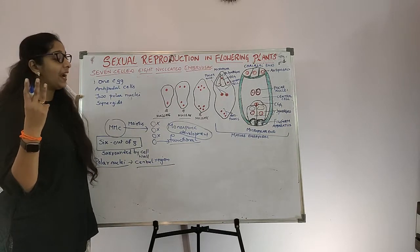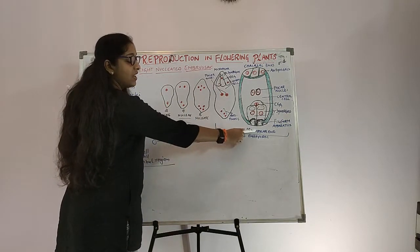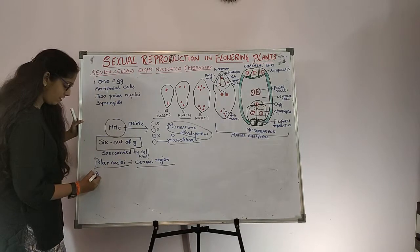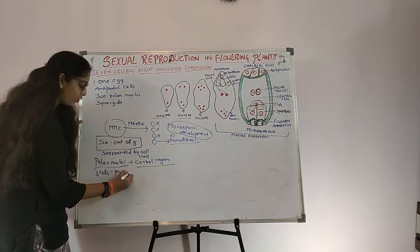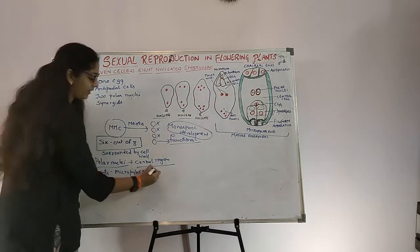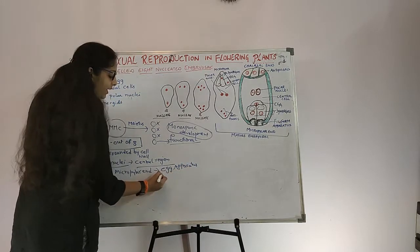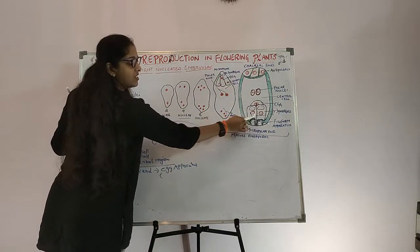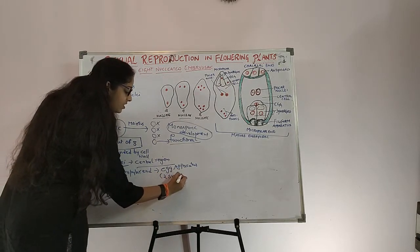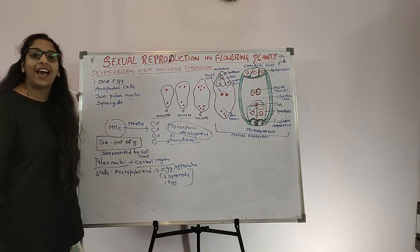Three cells are found at the micropylar end — where the micropyle is situated. Together these 3 cells are known as the egg apparatus. The egg apparatus consists of 2 synergids plus 1 egg cell, all together forming the egg apparatus.